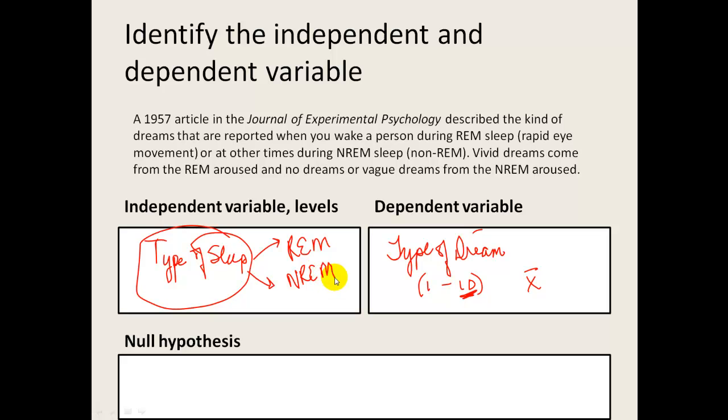So the null hypothesis, what we're doing is we're comparing the independent variable levels on the type of dream. So that we would say that there's no difference between the average intensity of dream for those in the REM group when compared to those in the non-REM group. That would be an appropriate null hypothesis. An alternate hypothesis could just be one of two-tailed significance. Or you could choose, if there's enough evidence already established, that you could have a one-tailed alternate saying that there's going to be more vivid dreams during REM sleep.